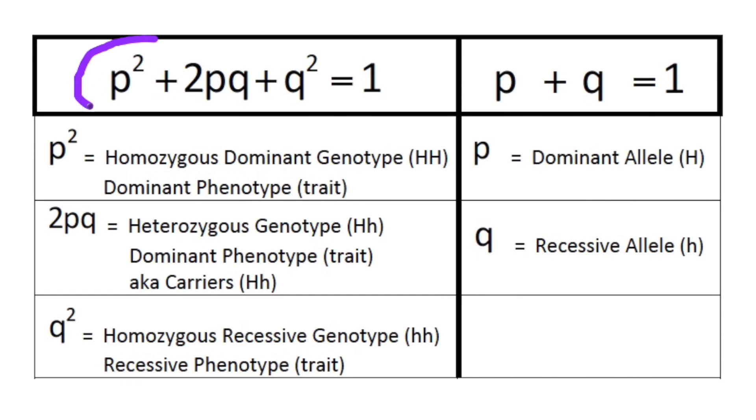The first one we have is p² + 2pq + q² = 1. And no, we will not be doing quadratic formula in order to solve genetics problems. Instead, we're going to be learning each term and what it represents, as well as how to find it in word problems and how to use each one individually to solve the word problems as easily as possible.